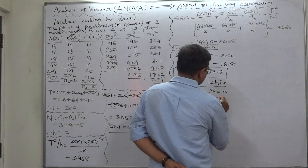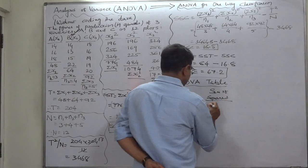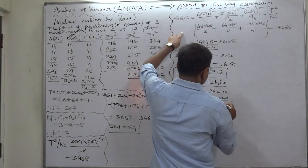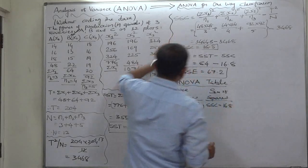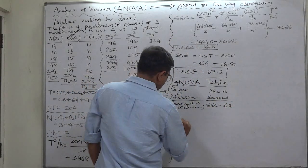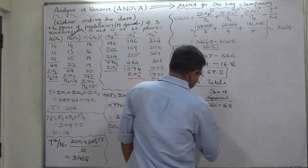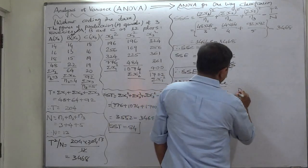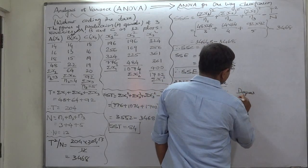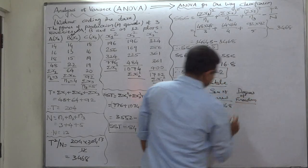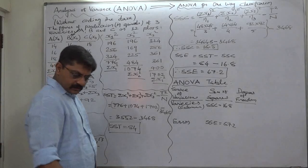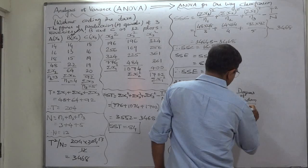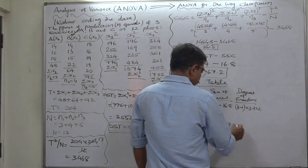Setting up the ANOVA table: the source of variation for columns has sum of squares SSC = 16.8, and for error, SSE = 67.2. The degrees of freedom for columns is k minus 1, which is 3 minus 1 = 2.